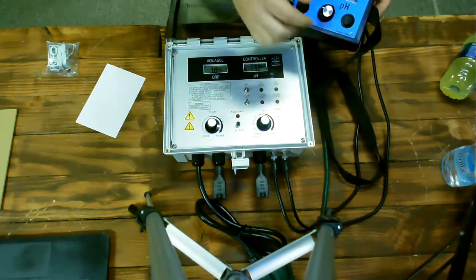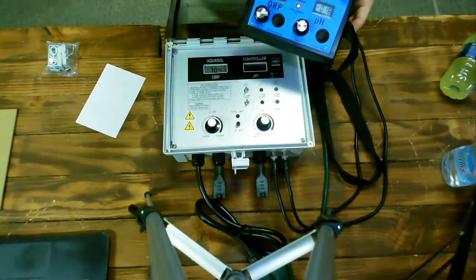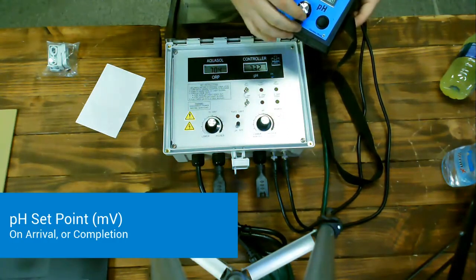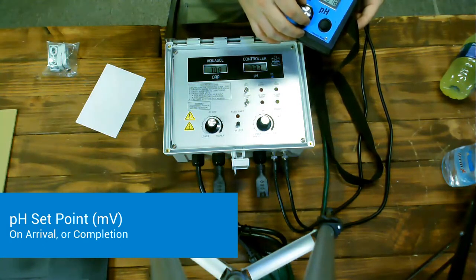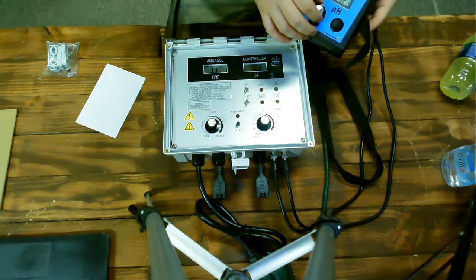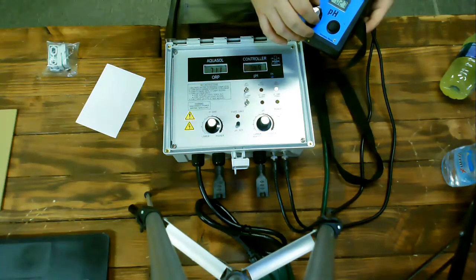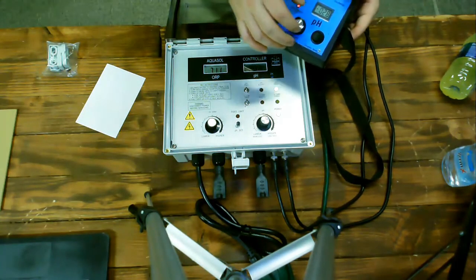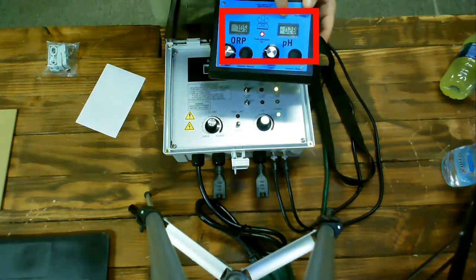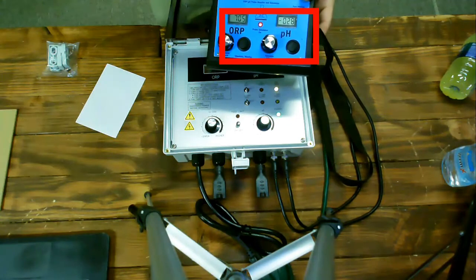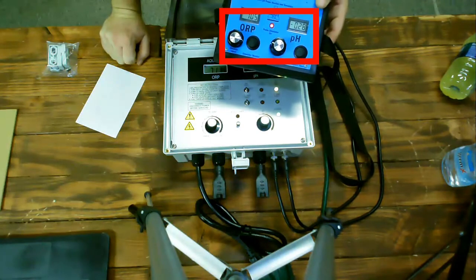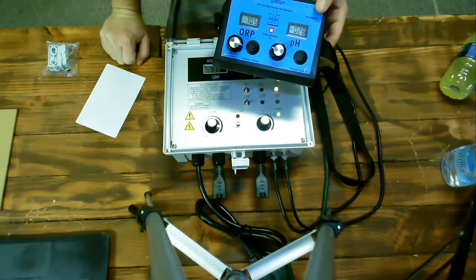Next, I will use the pH channel to find the point where the controller is turning on and off for the pH feed channel. Here we find that it's turning on and off at negative 28 millivolts. So, on my tech call form, I would record the ORP set point in millivolts at 700 millivolts on arrival, and the pH set point in millivolts on arrival would be negative 28 millivolts.